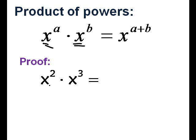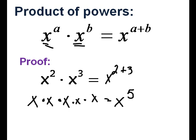So let me show you the proof for that one. X squared is the same thing as x times x. X to the third is x times x times x, so that gives us 1, 2, 3, 4, 5 x's, or x to the fifth. That's the same thing as saying x to the 2 plus 3, which is x to the fifth.